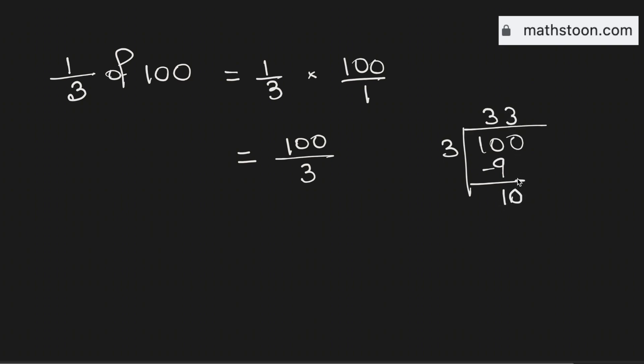Now again 3 times 3 is 9. Subtract, we get 1. As 3 cannot go into 1, we need to put a decimal here so that we can bring 0. Again 3 times 3 is 9. Subtract, we get 1.